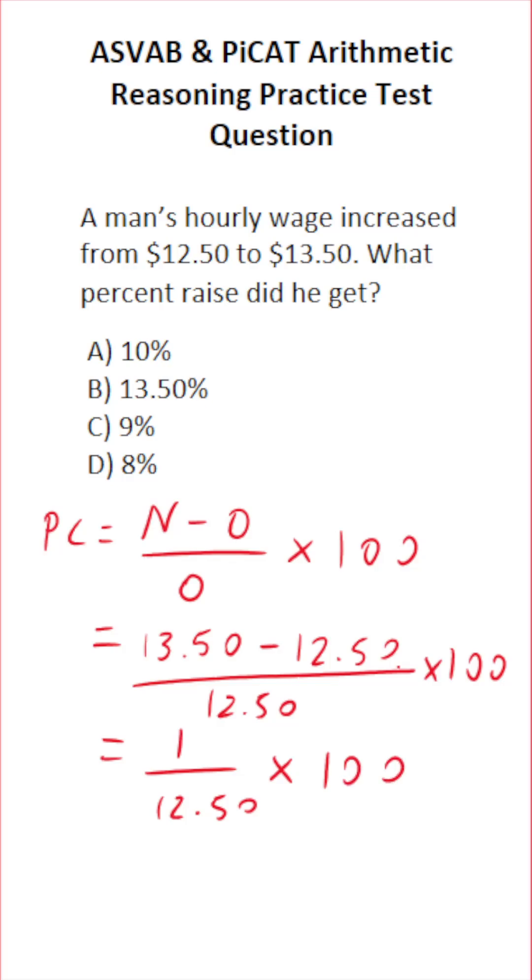If you want, we could do this math off to the side. We have one divided by $12.50. Again, you cannot do division with the decimal outside the division bracket. So we're gonna move it one time to the right, and move the decimal here a corresponding number of times and add a zero placeholder. This becomes 10 divided by 125.